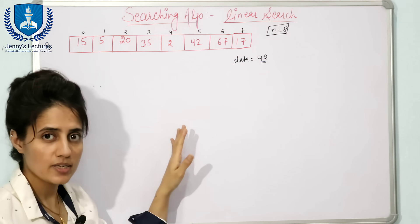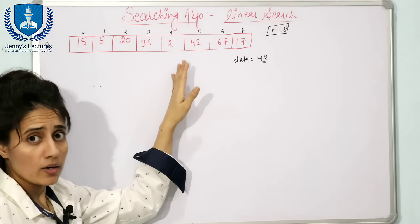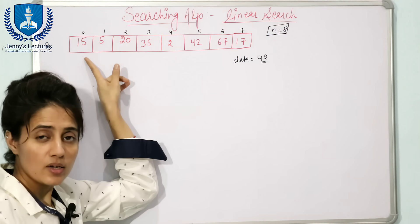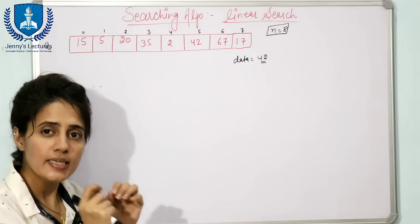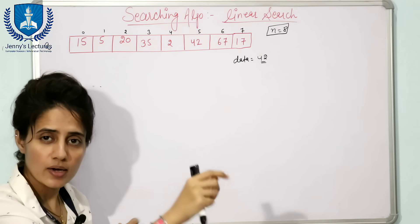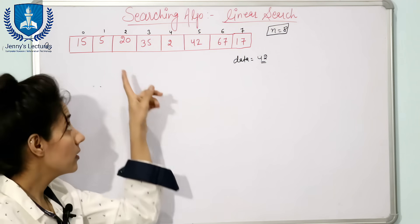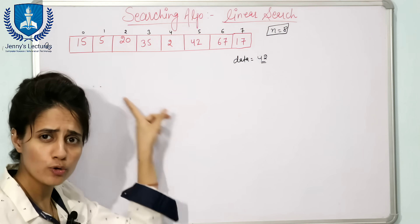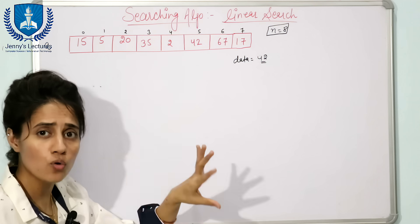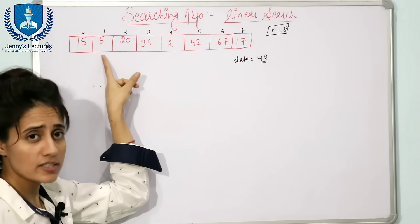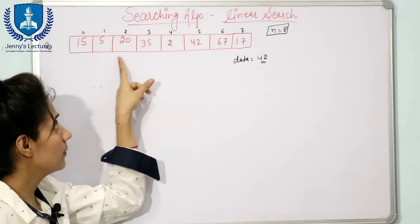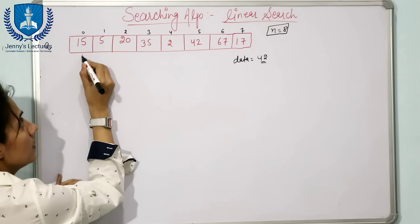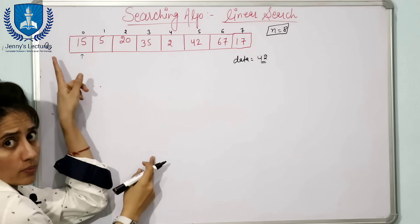In linear search, we are going to start our search from the beginning of the array — from the 0th index. We are going to access each element of the array one by one and check whether this is the desired data. If yes, return that location. If no, move to the next element, then to the next, and so on.